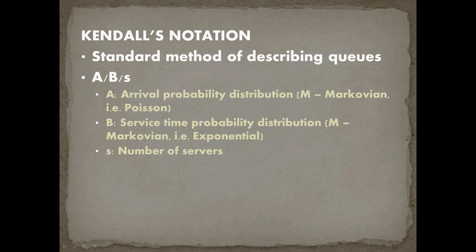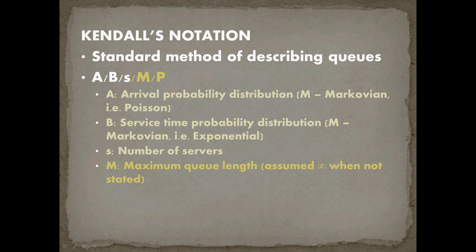The fourth and fifth elements of Kendall's notation are optional. The fourth element is the maximum queue length — for example, if our queue can only handle four people due to storage capacity. If not shown, it's assumed to be infinity. The fifth element, P, is the population size. For example, if modeling 20 aircraft, with some awaiting maintenance, only the remaining aircraft could arrive, changing the arrival rate. If not shown, population is assumed to be infinity.